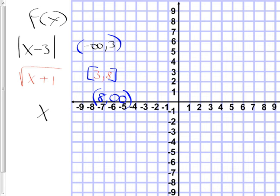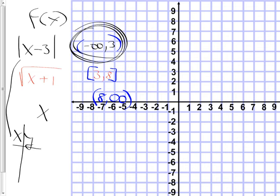I'd like you, right now, to give it a shot. After a couple minutes, I'll give you some help. If you have no clue where to start, start by making a little x-y chart for this piece, and only use numbers that are in the zone — only use numbers between negative infinity and 3. So there's no point using something like 5, because it's outside the zone. Make a little x-y chart. If nothing else, start with that.